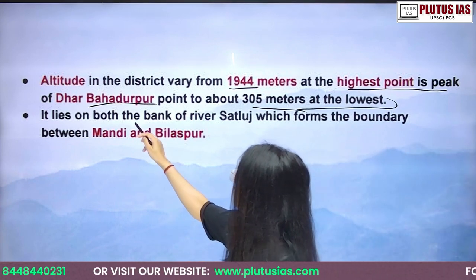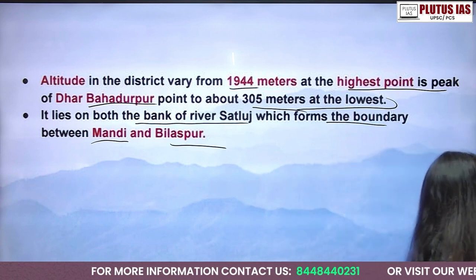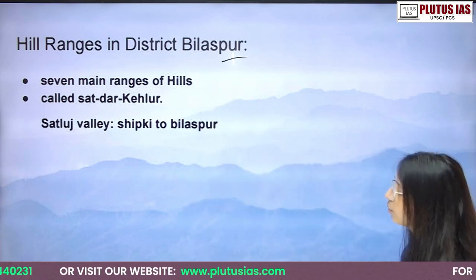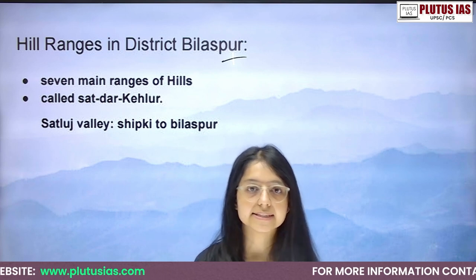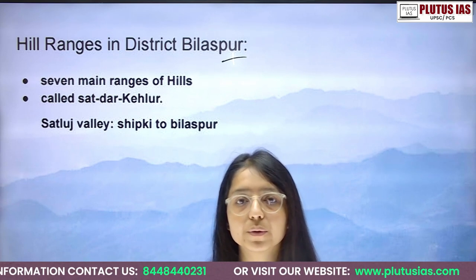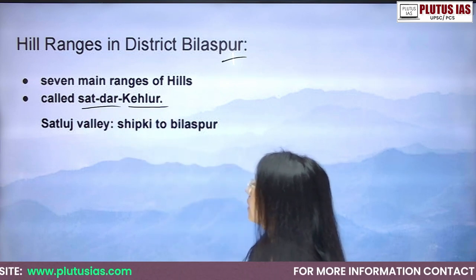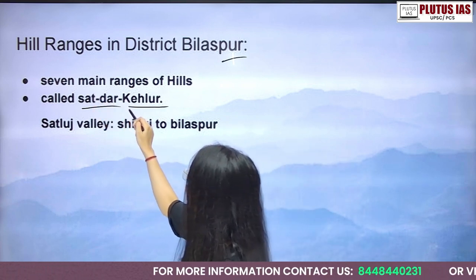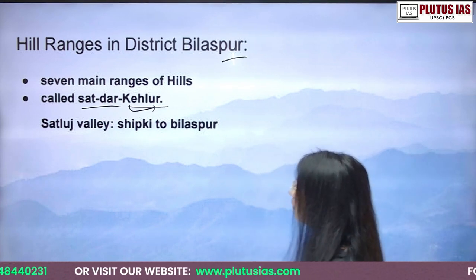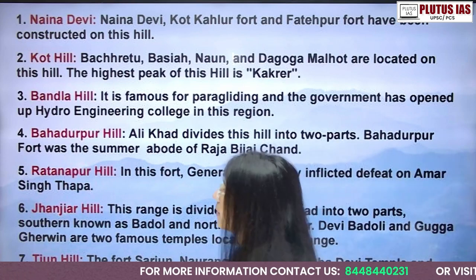Bilaspur lies on both banks of the Satluj River, which forms the boundary between Mandi and Bilaspur. In Bilaspur district there are seven hill ranges. In the princely time these were predominantly used and the district's old name was Kahlo, meaning seven ranges are present in district Bilaspur.